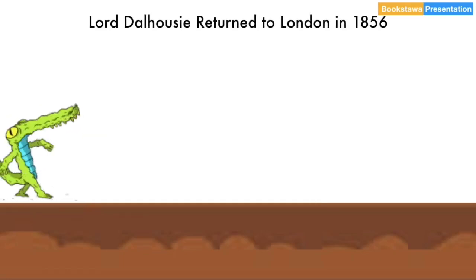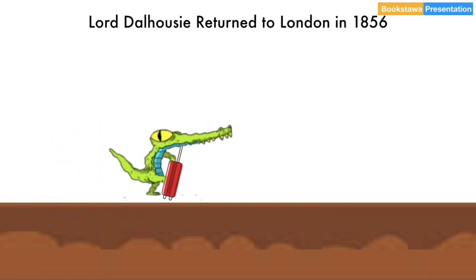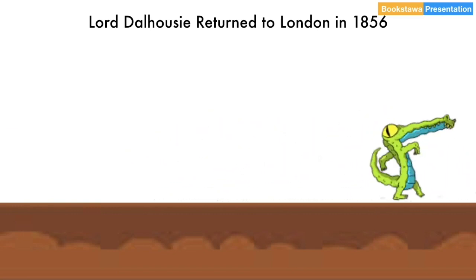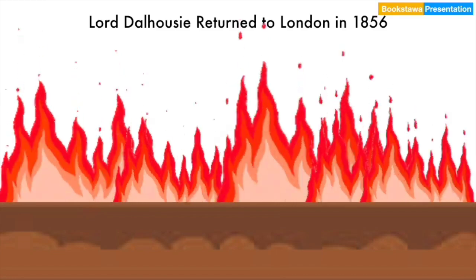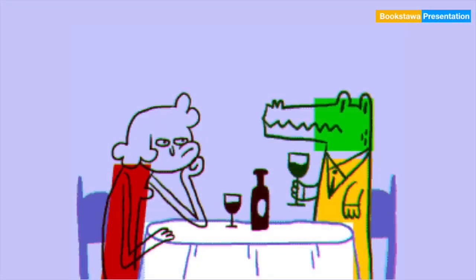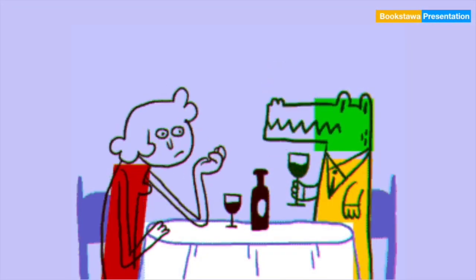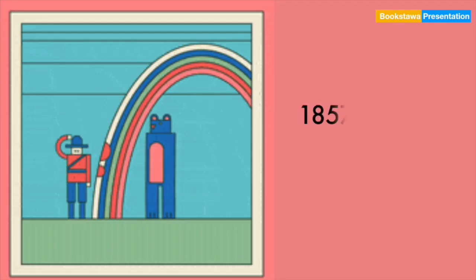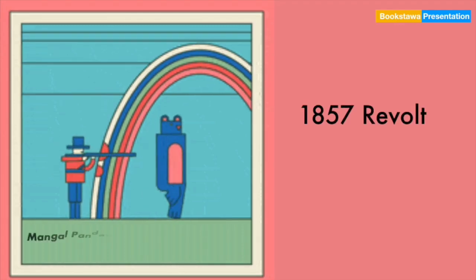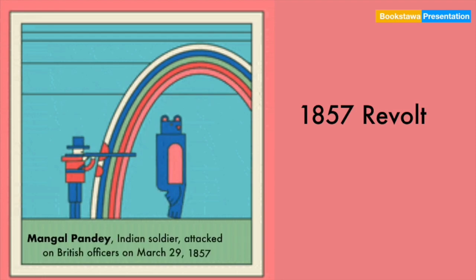After doing all this, Lord Dalhousie went back to London in 1856 after being Governor General for 8 years. But the scandals he did, such as the forcible annexation of Awadh, angered the people of Awadh and the Indian soldiers. The annexation of Awadh angered the Muslims as well, and the Widow Remarriage Act also caused a lot of trouble to the Hindus. That's why when Lord Dalhousie reached back to London and was telling his stories to his friends, the revolt of 1857 had started in India, which started with a bullet fired from Mangal Pandey's gun.